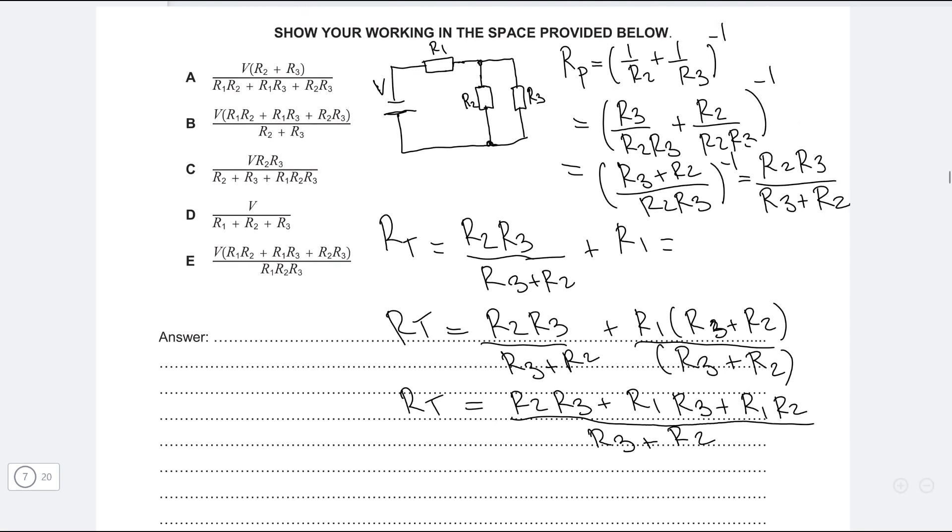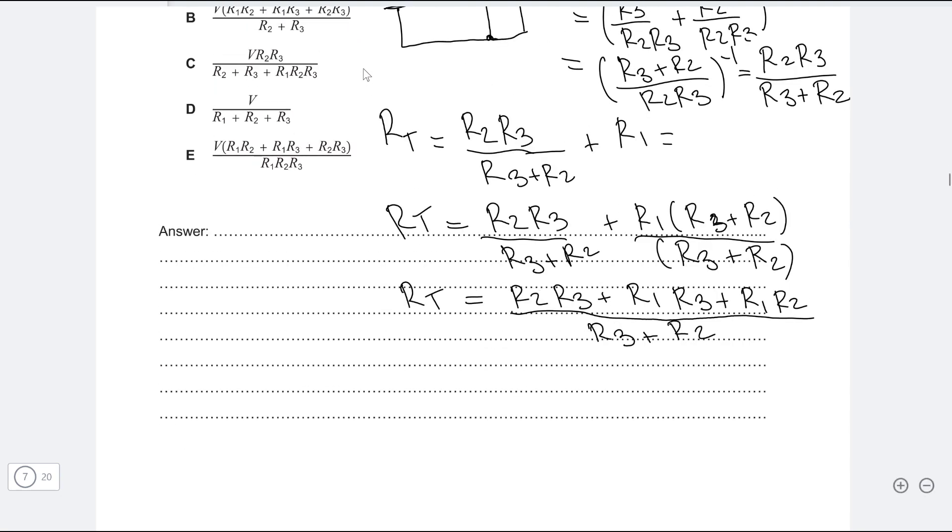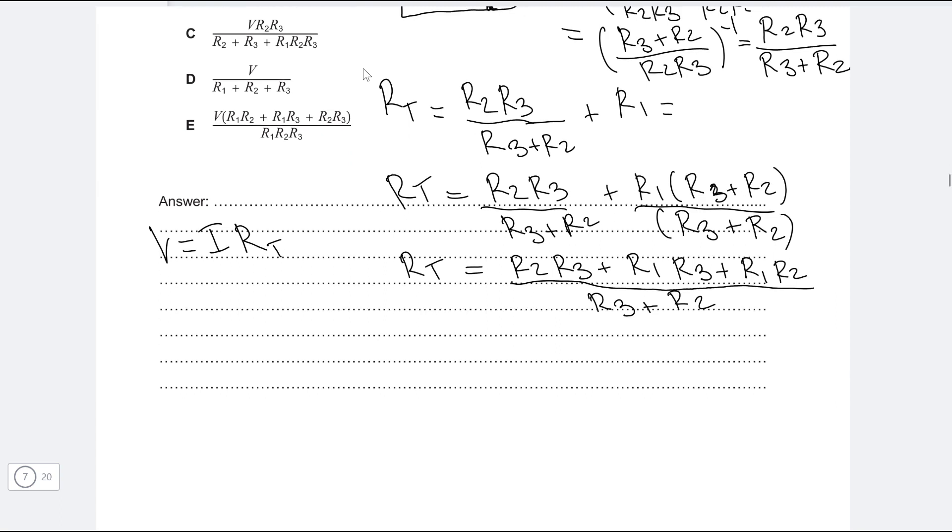So this is actually a good expression now for R total. Now all we need to do is just apply Ohm's law across the power supply. So remember Ohm's law simply says that V is equal to IR, where R in this case is going to be the R total.